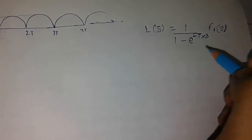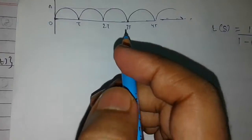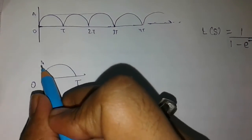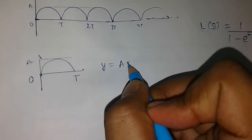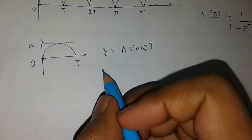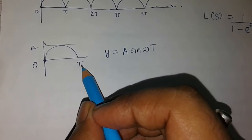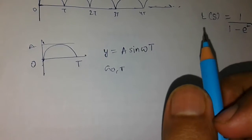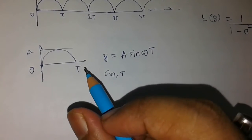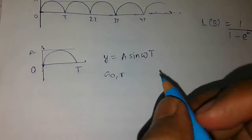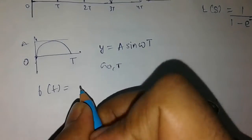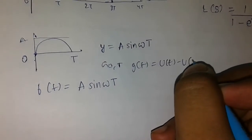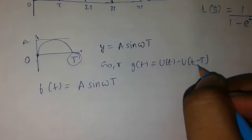This is a simple formula and you can derive it using geometric progression. As you can see, the function is given to us. For the first cycle from 0 to T with amplitude a, we have the equation y = a·sin(ωt). Since the function ranges between 0 and T, we will use the gate function as a parameter to multiply with this in order to find its Laplace.